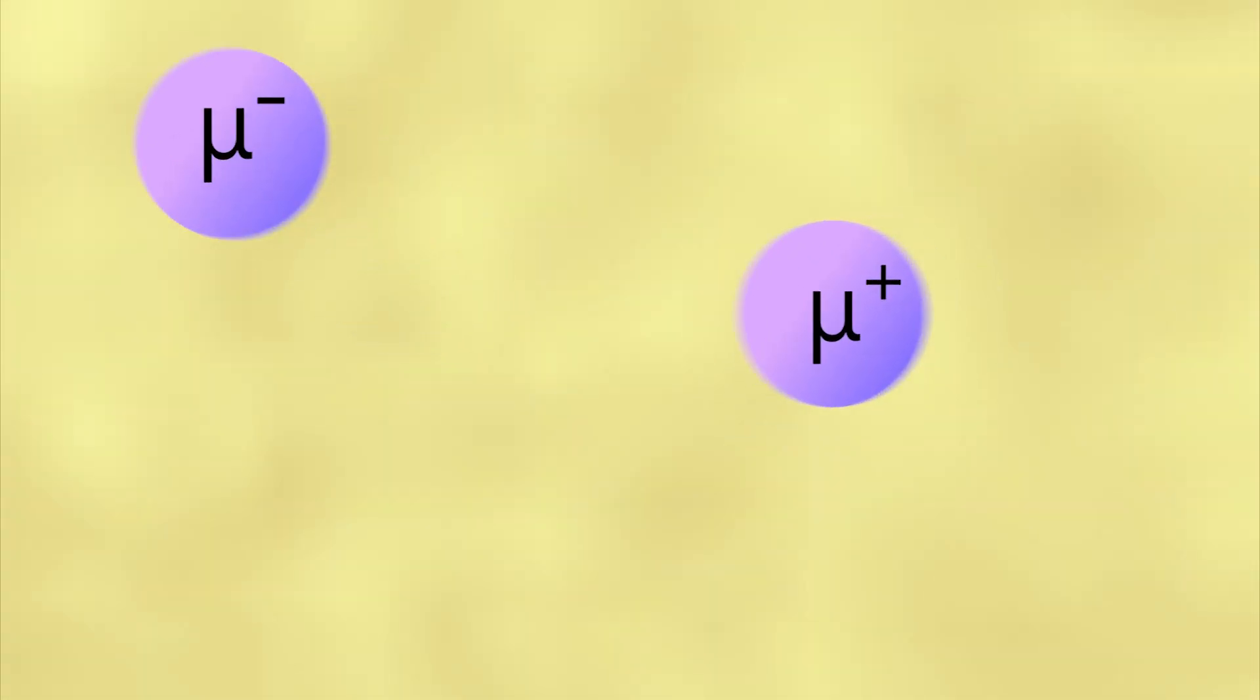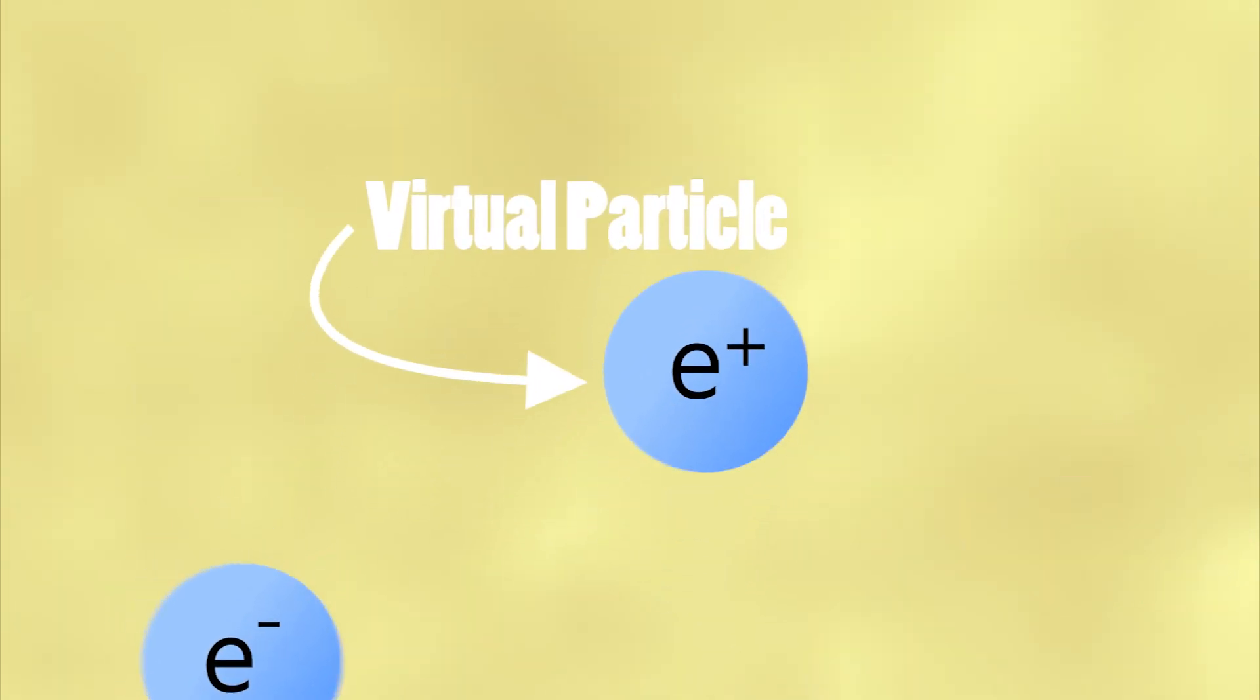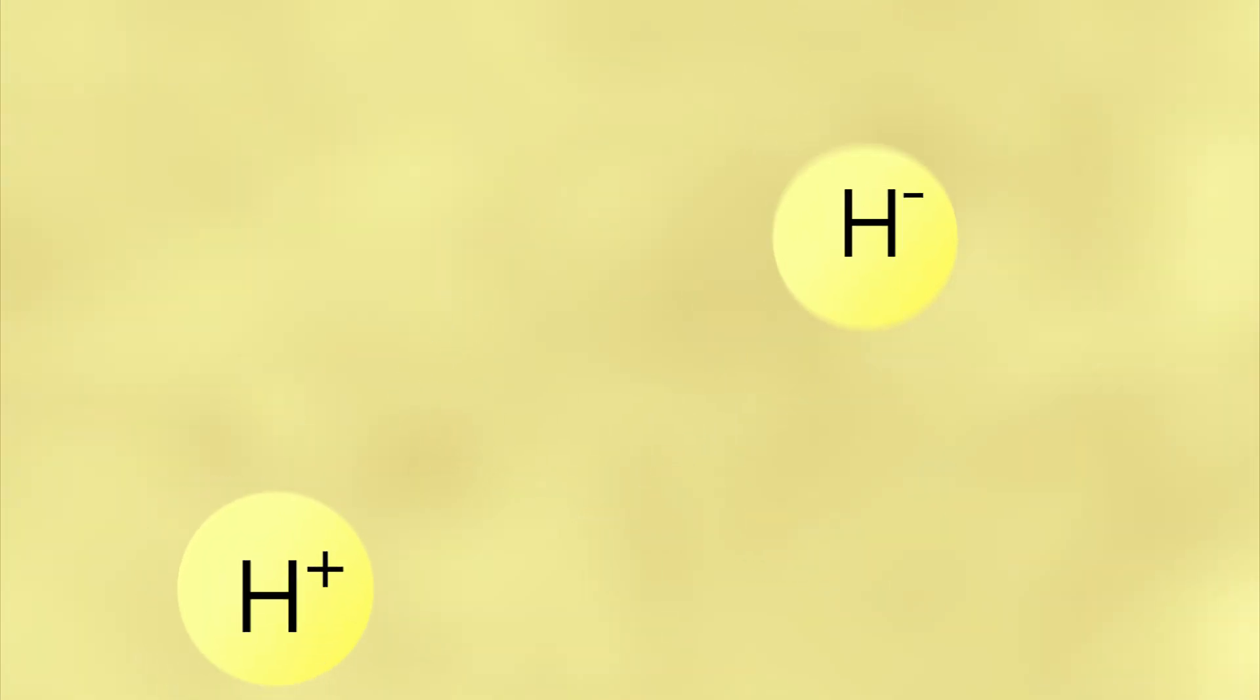Although this interplay of fields is complicated to fully understand, the resulting effect is that there are infinitesimally small reactions occurring on the subatomic scale. We call these reactions virtual particles. These particle-like entities pop in and out of existence, barely ever being a part of our reality.